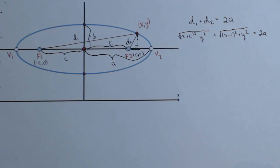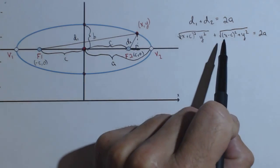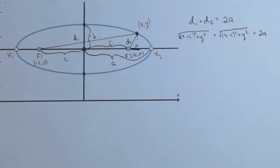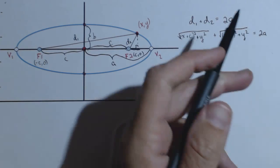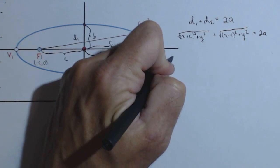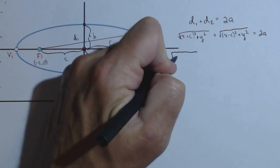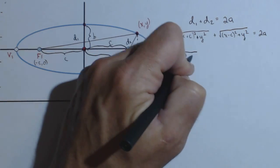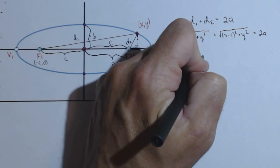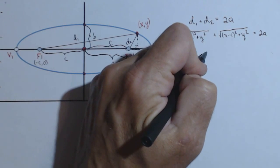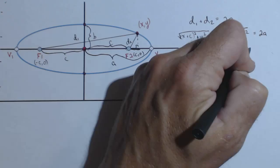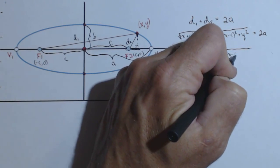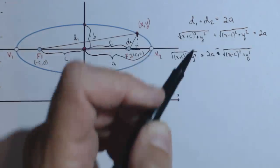So we've set up the relationship. The next thing to do is our algebra. So what I'm going to do is I'm going to need to get rid of my square roots. Sorry, there should be a plus in here. We're using the Pythagorean theorem. I'm going to move one of these pieces to the other side. We're going to have to square and start getting rid of these radicals. So I'm going to have square root of X plus C, the quantity squared, plus Y squared, equals 2A minus square root of X minus C squared plus Y squared.